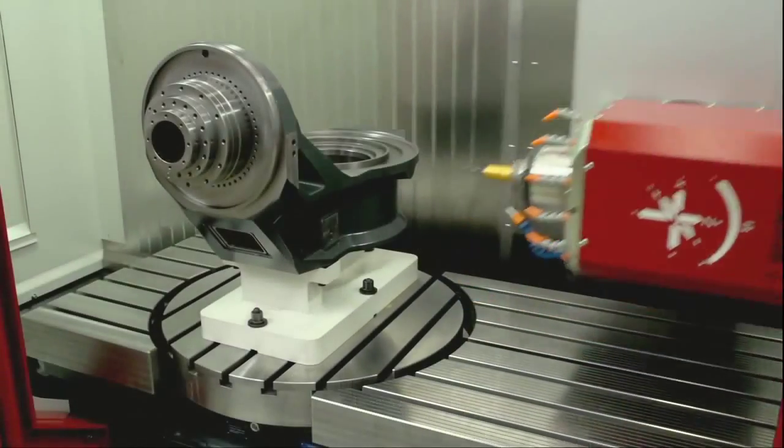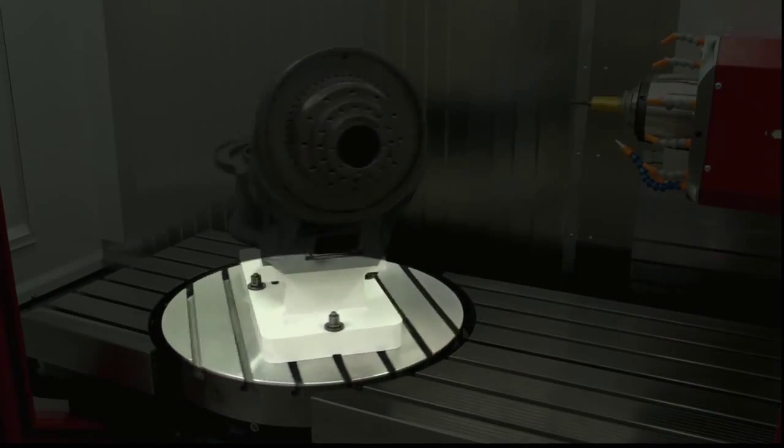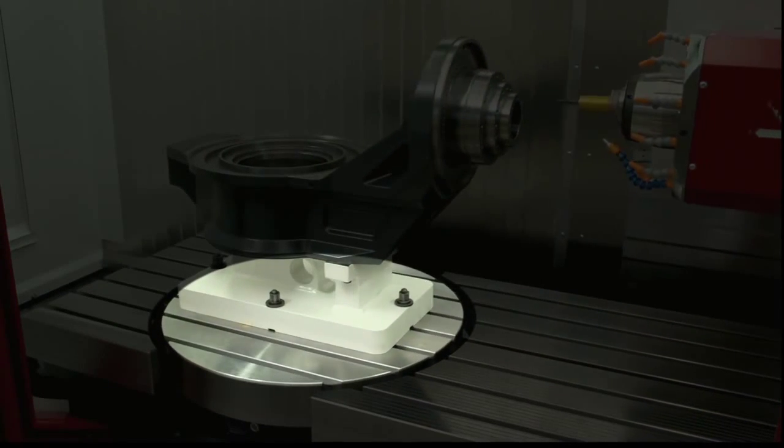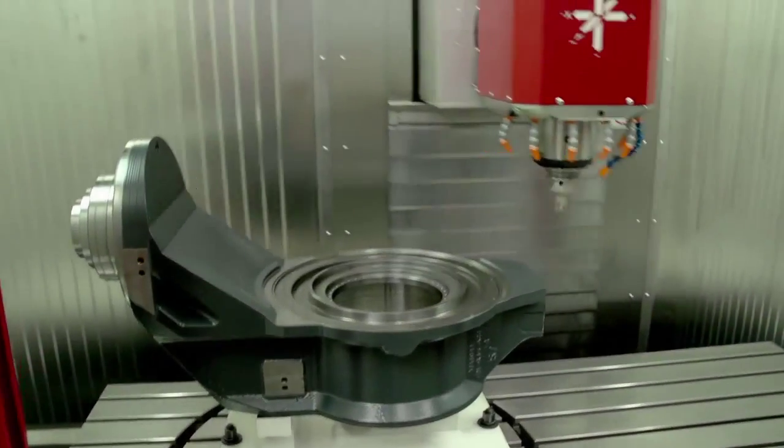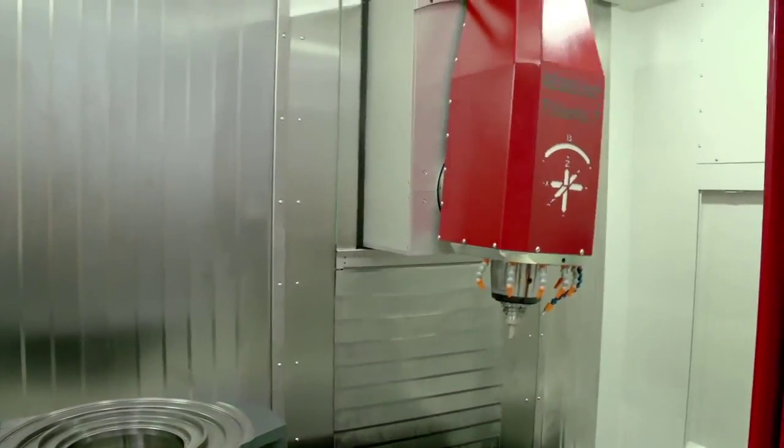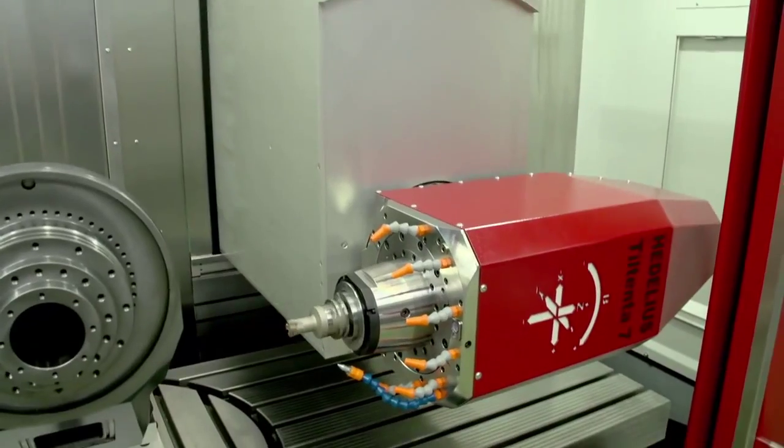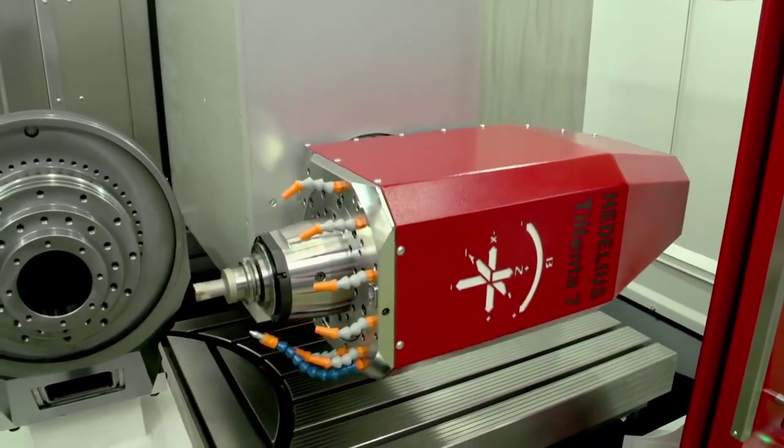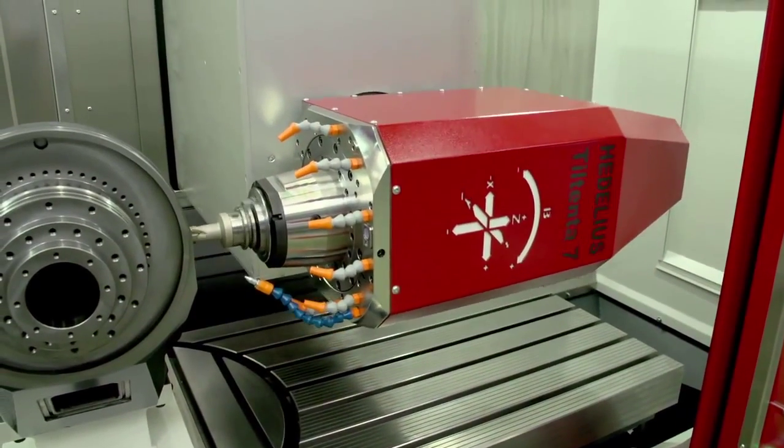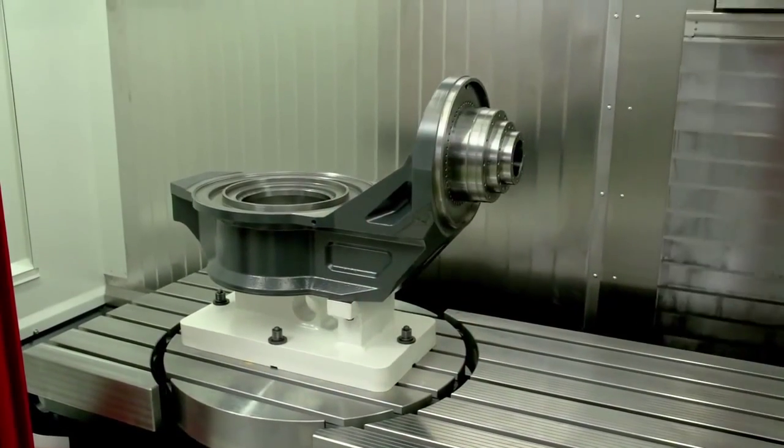The heavy duty NC rotary table, integrated into the machine table so as to form a level surface together with the infinitely pivotable main spindle, enables high performance 5-axis processing of workpieces up to a clamping weight of 1200 kilograms and a diameter of 1100 millimetres.